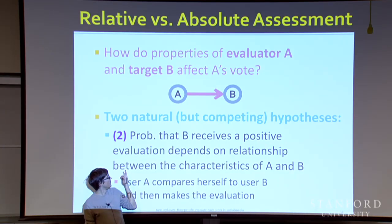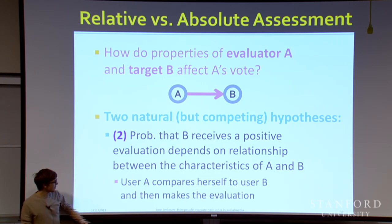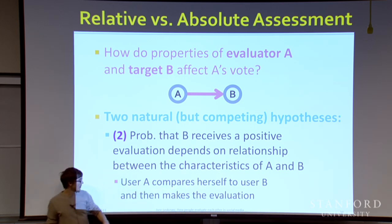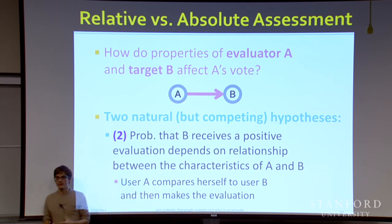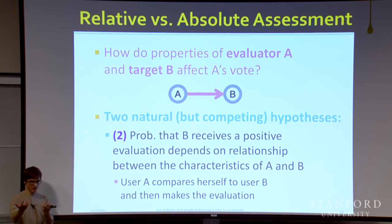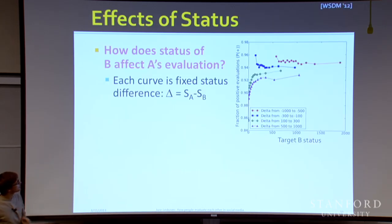The second hypothesis is that the probability that B receives a positive evaluation depends on the relationship between the characteristics of users A and B. Here, user A shows up, compares herself to user B, and then makes an evaluation — everything is relative. A user A shows up, sees who the candidate is, compares their own characteristics against the candidate, and makes a decision. So the question is: which of the two hypotheses is more true?